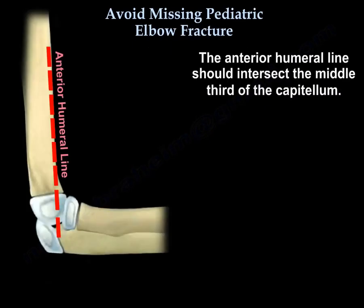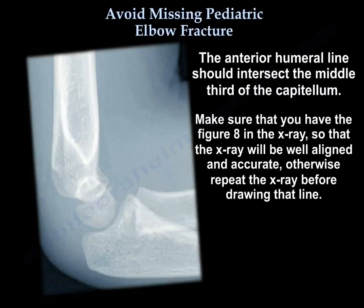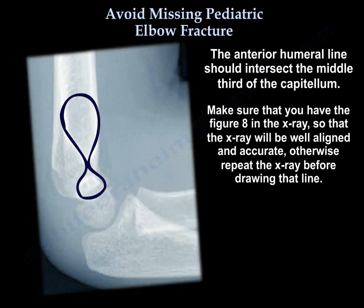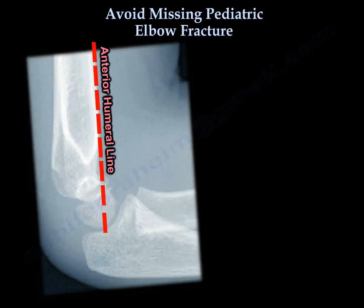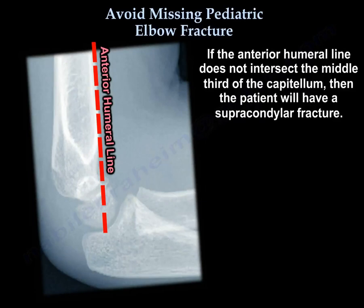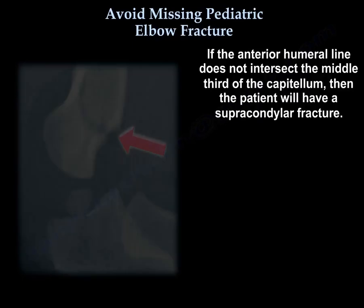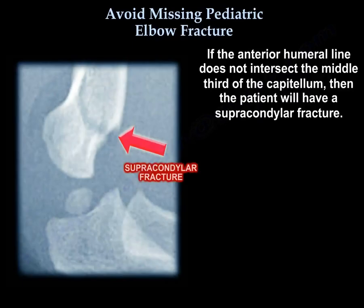The anterior humeral line should intersect the middle third of the capitellum. Make sure you have the figure-8 in the x-ray so it will be well aligned and accurate — otherwise, repeat it before you draw that line. If the anterior humeral line does not intersect the middle third of the capitellum, then the patient will have a supracondylar fracture.